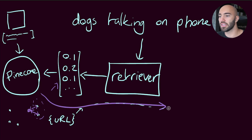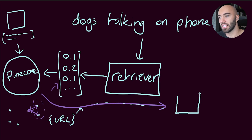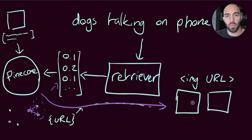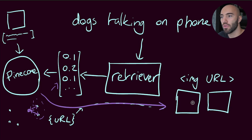We don't really care about the vectors themselves, but we care about the metadata attached to them, which includes the URL to the original GIF file. We use that URL with a simple HTML image tag to display the GIF on screen. You will be able to find all of this code via a link in the video description or at the bottom of the article, so I'm going to go through it fairly quickly.